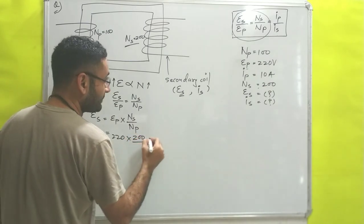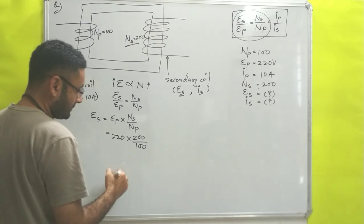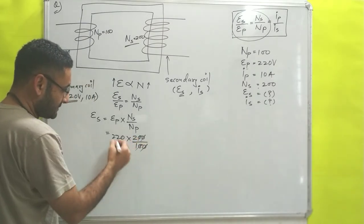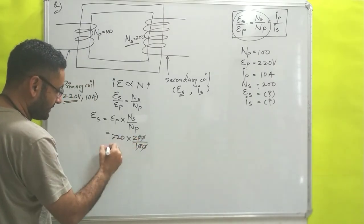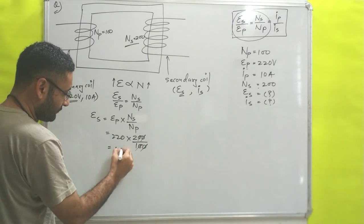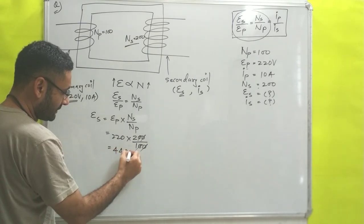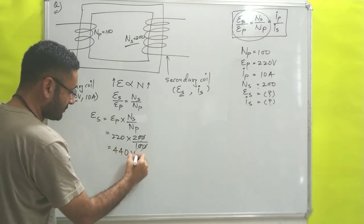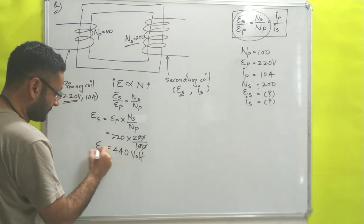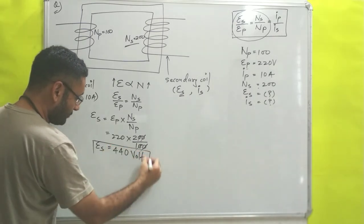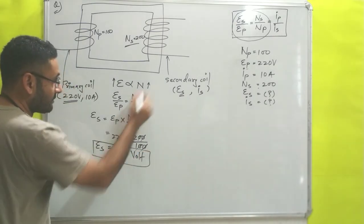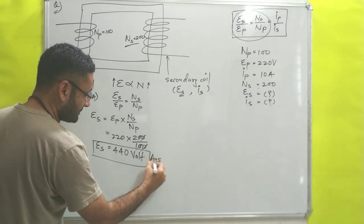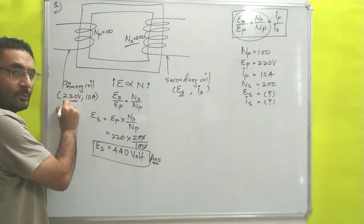Divided by NP = 100. That gives us 440 volts. So the potential on the secondary side is 440 volts, which is higher than the potential on the primary side.